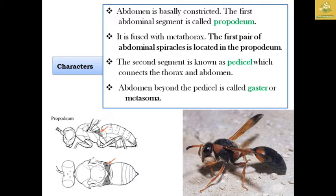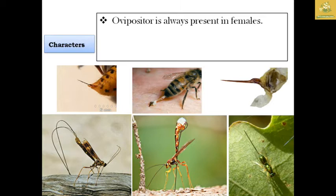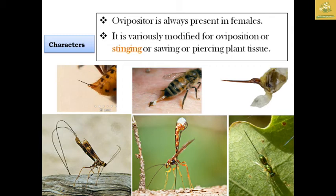The ovipositor is always present in females, but in males it can be present, modified, or absent. It is variously modified for stinging, sawing, or piercing plant tissue, depending on the type of insect.